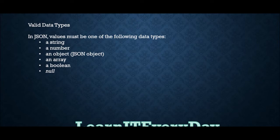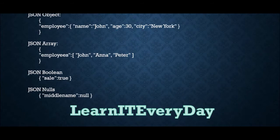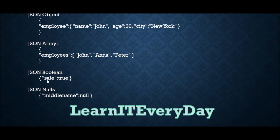Let's look at the different data types JSON supports. First is string, second is number, third is object, fourth is array, fifth is boolean, and sixth is null. String must be inside double quotes, and number can be either integer or float. An object is when another JSON is embedded within a JSON. An array is when one attribute has multiple values. Boolean must be either true or false, and null is also supported.